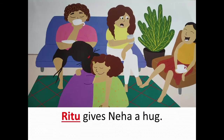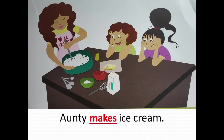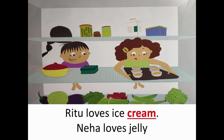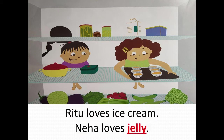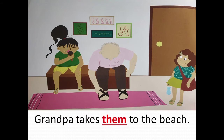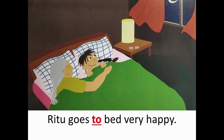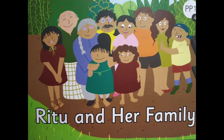Ritu and Her Family. It is Sunday. Uncle Ram has come to visit. Ritu gives Neha a hug. Grandma makes jelly. Auntie makes ice cream — yum! Ritu loves ice cream. Neha loves jelly. The family has dinner. Grandpa takes them to the beach. Grandpa takes them in his big red car. Ritu goes to bed very happily.